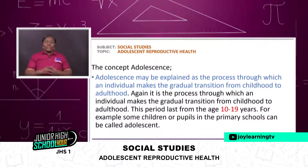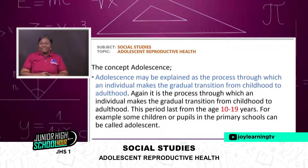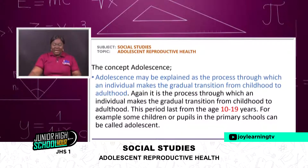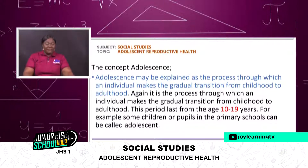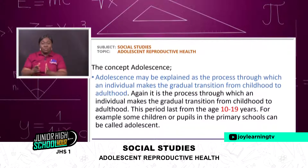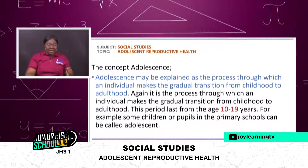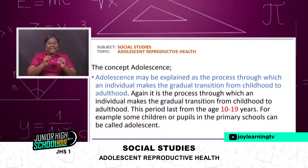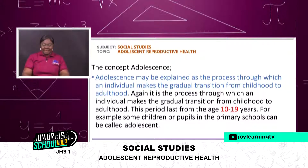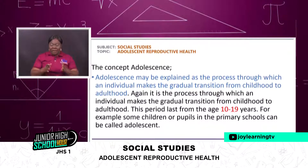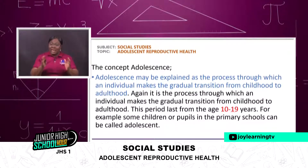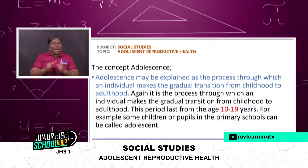Let's look at the concept of adolescence. Adolescence may be explained as a process through which an individual makes a gradual transition from childhood to adulthood. This period lasts from age 10 years to 19 years. For example, some children in primary school can be called adolescents. If you find yourself between the age of 10 and 19 years, then you are an adolescent.